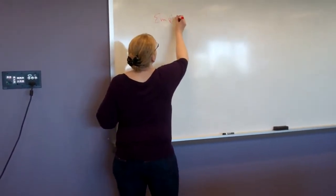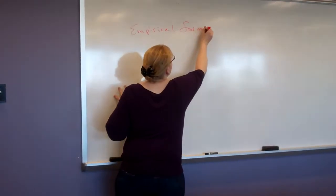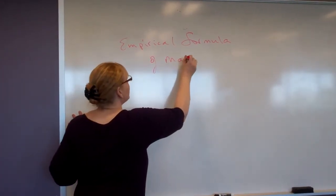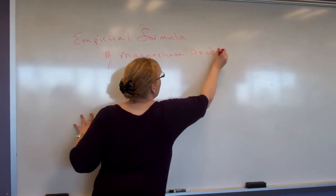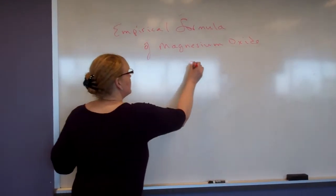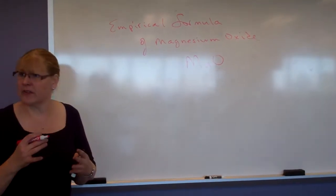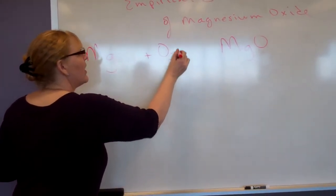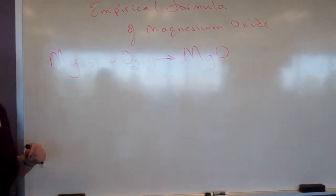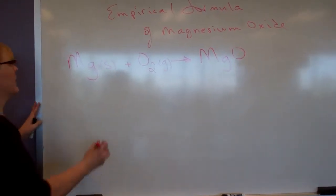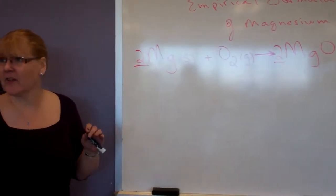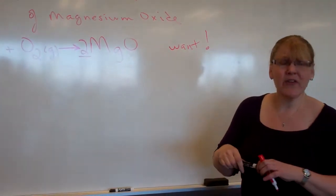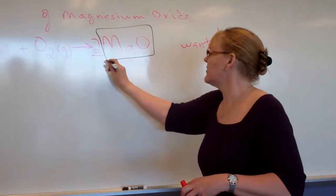We're working on empirical formula, which is the simplest formula. We're trying to get the empirical formula of magnesium oxide. What is the empirical formula for magnesium oxide? MgO. Now we're going to do this experimentally, which means we are going to take some magnesium as a solid and burn it in oxygen as a gas to make magnesium oxide.